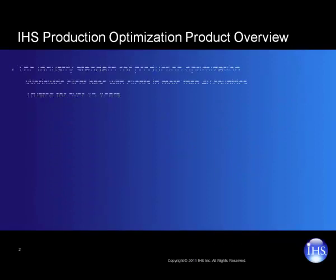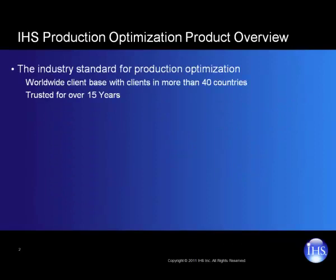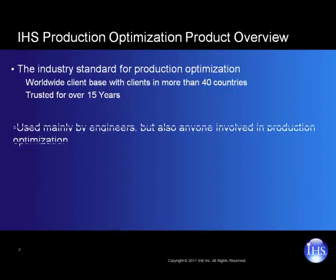IHS production optimization applications are the industry standard for production optimization and have been trusted by companies in more than 40 countries for over 15 years. They are used by production, reservoir, completion, and facilities engineers, as well as anyone else involved in optimizing oil and gas production.